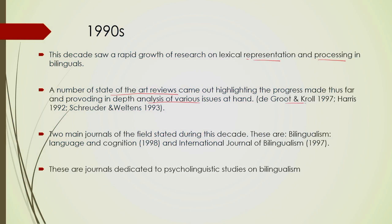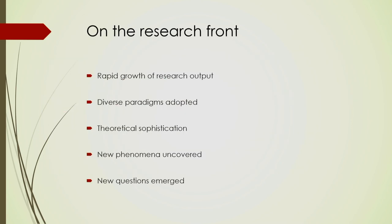Most important among these reviews were a few I have mentioned here; Groot and Kroll's is also quite well known. At the same time, there were new journals that came out during this time which, even today, are among the best journals in this domain. One was Bilingualism: Language and Cognition, which came out in 1998, and the International Journal of Bilingualism. These dedicated journals in psycholinguistic aspects of bilingualism actually started in the 90s.